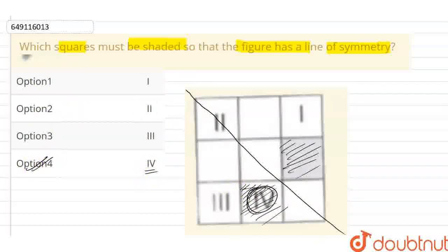The square number which is 4 needs to be shaded. If you look at this line of symmetry, then you will shade it. So now this figure has our symmetry. Thank you.